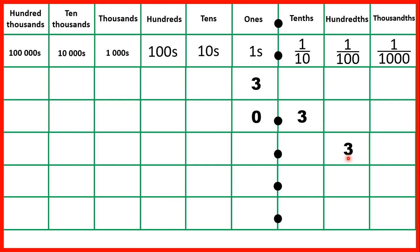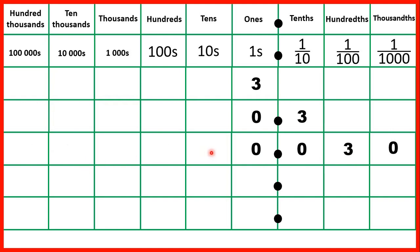What if we have three hundredths? All of our other place values are really zeros, but we don't need zeros in our whole number place value columns except for our ones column, and we don't need zeros on the end of decimals. But we do need this zero in our tenths, because we need to show three hundredths. Our hundredths place value column is always the second place value column after the decimal point, so if we didn't have zero in our tenths, the three would be in our tenths. The three must be the second digit after the decimal point.